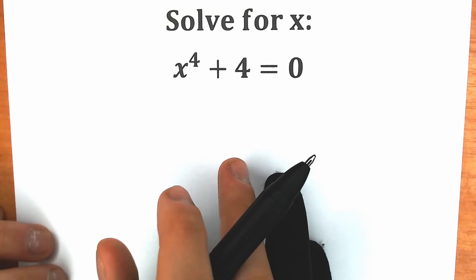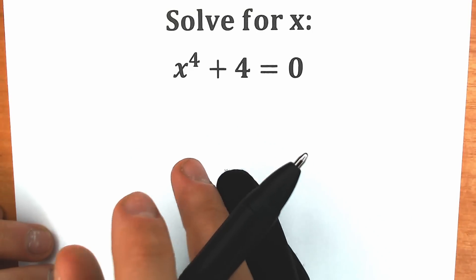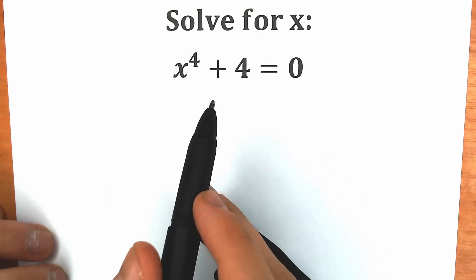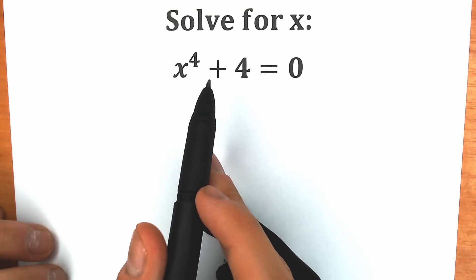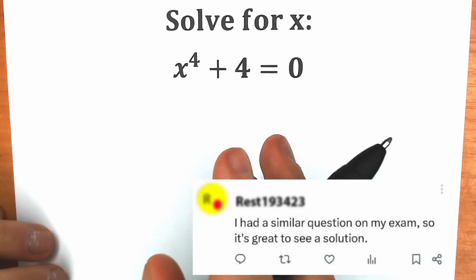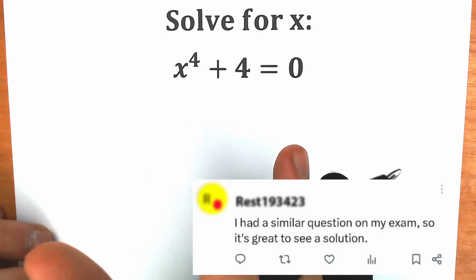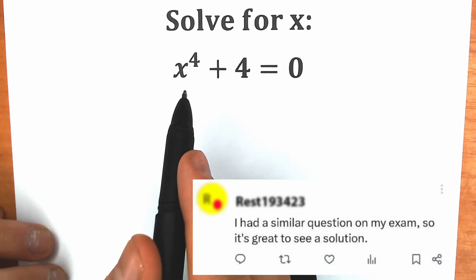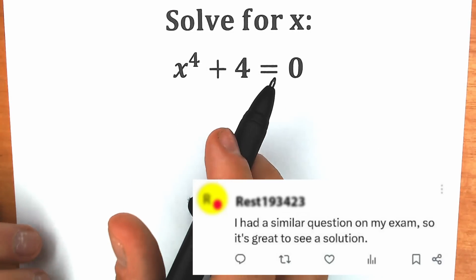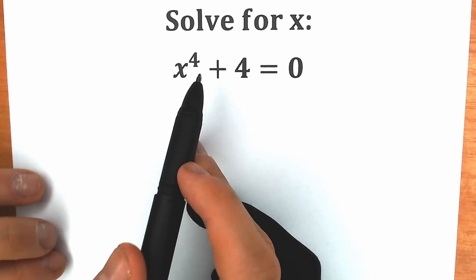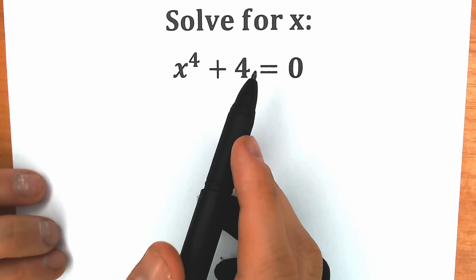Hello everyone, happy to see you here, welcome back to my channel HiMASemantics. Today we have a really interesting equation: x to the fourth power plus 4 equal to 0. One student wrote a comment under my post about this question, and a lot of students have difficulties with this type of question.